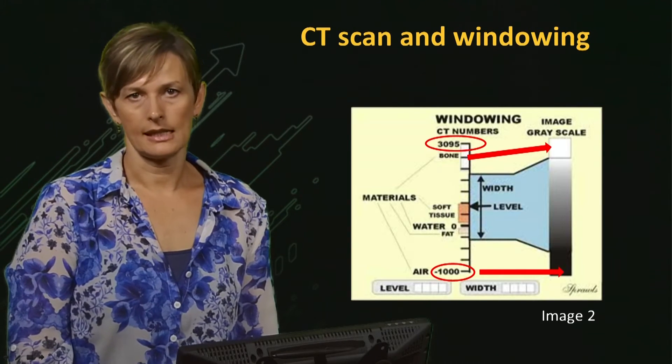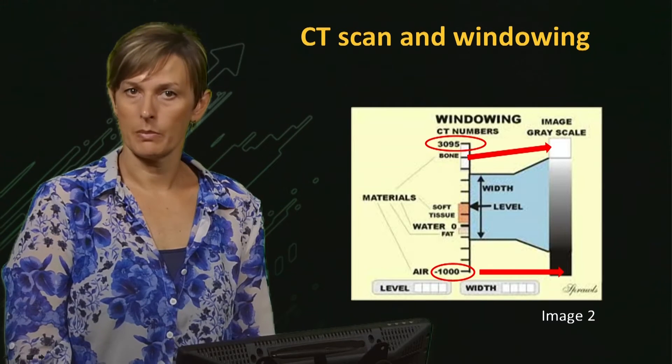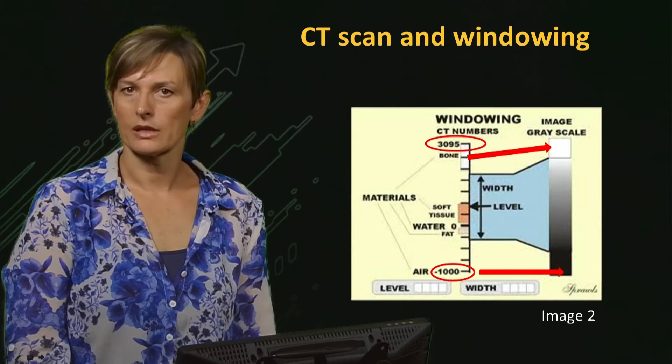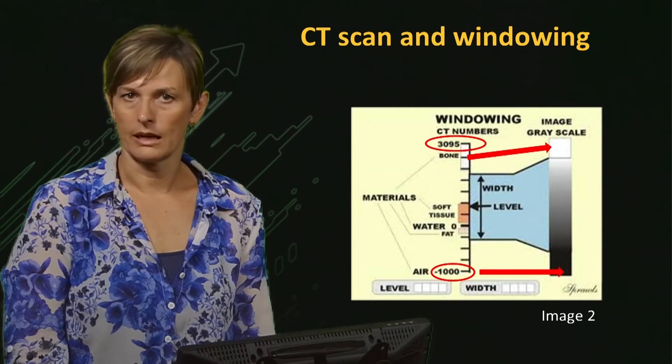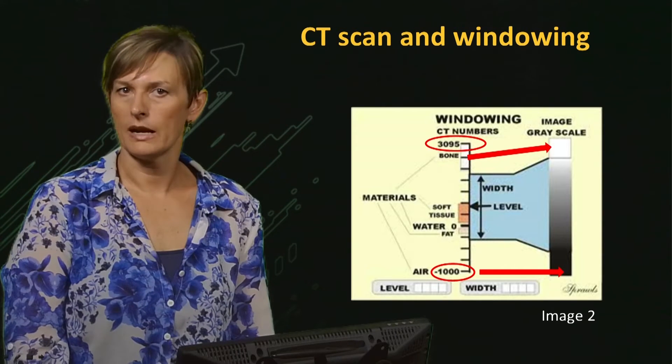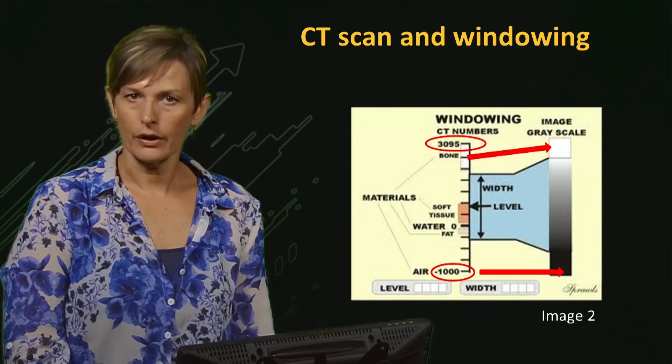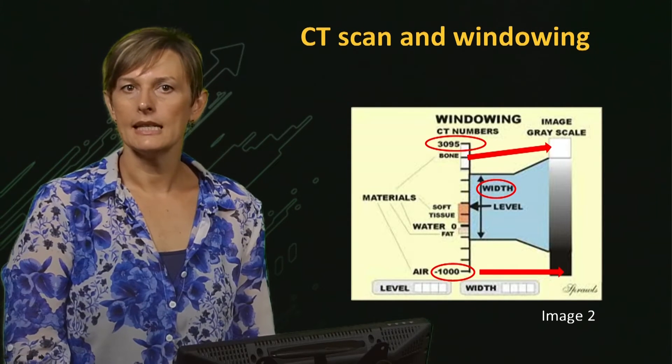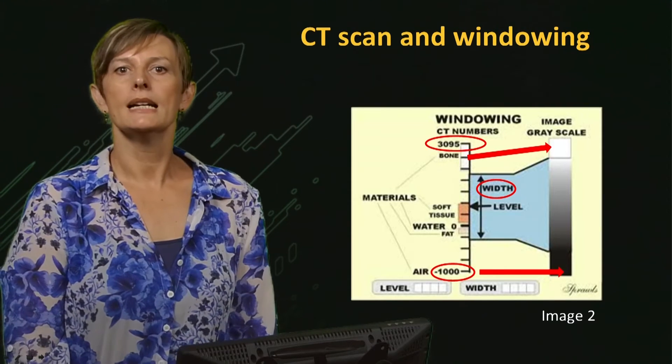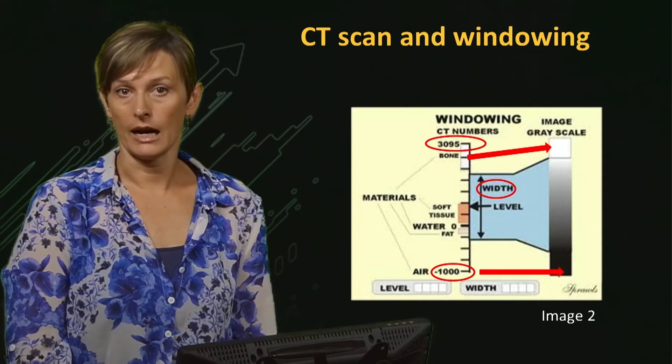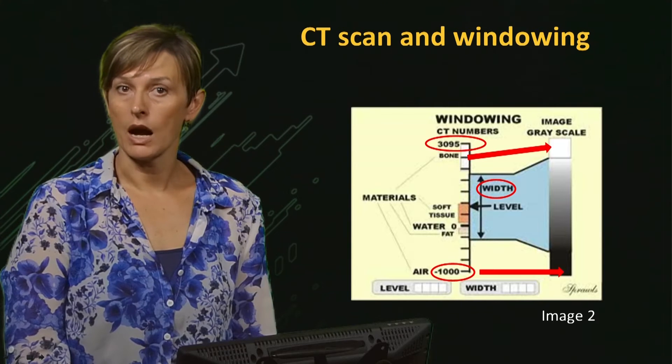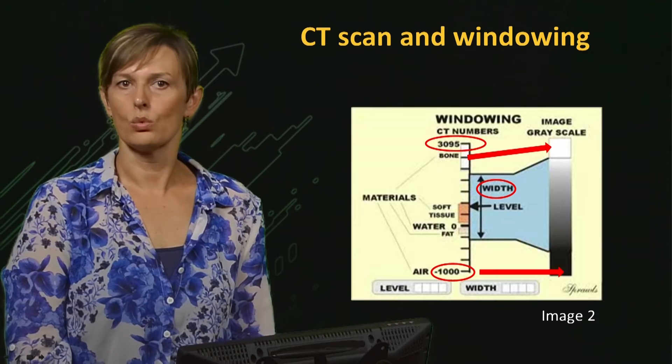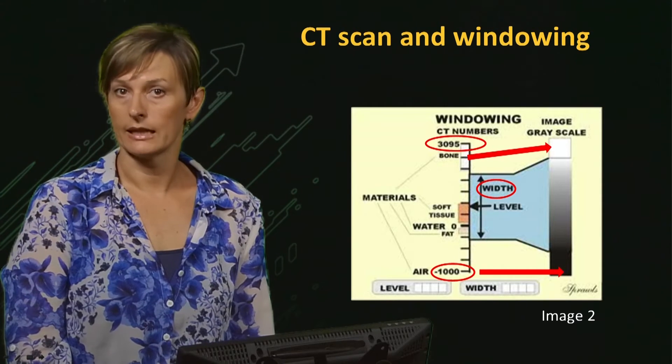During a CT scan, the radiographer will set up the imaging parameters and her monitors will display the settings. This process is called windowing. With two important factors displayed during this process, the first factor W represents the window width. It describes the range of CT numbers displayed in different shades of grey, ranging from black to white. It means that if the radiographer reduces the window width, the contrast among tissue will increase.